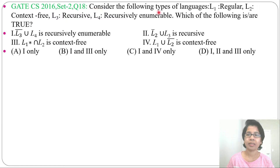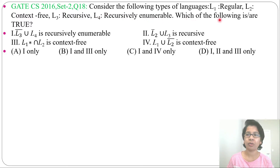Consider the following types of languages: L1 is regular, L2 is context-free, L3 is recursive, and L4 is recursive enumerable.